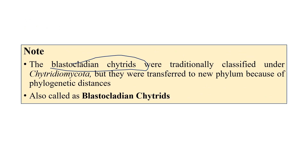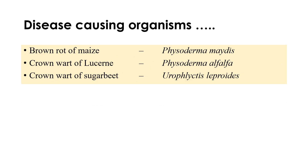Blastocladian chytrids were previously placed under Chytridiomycota, but based on phylogenetic distances they were reclassified into a new phylum, Blastocladiomycota — that is why they are also called blastocladian chytrids. Important diseases caused by this group include brown rot of maize caused by Physoderma zeae-maydis, crown wart of lucerne caused by Physoderma alfafae, and crown wart of sugar beet caused by Urophlyctis leproides.